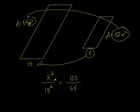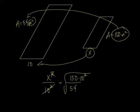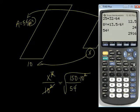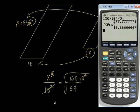There are actually two steps to solve this. First, get rid of the 10 squared by multiplying both sides by 10 squared. So X squared equals 150 times 10 squared divided by 54. Then to get just X, take the square root. The square root of 150 times 100 divided by 54 gives us about 16.7. So X is approximately 16.7.